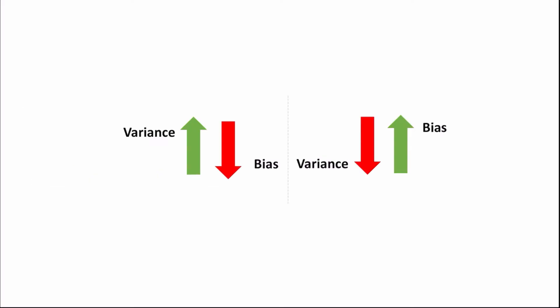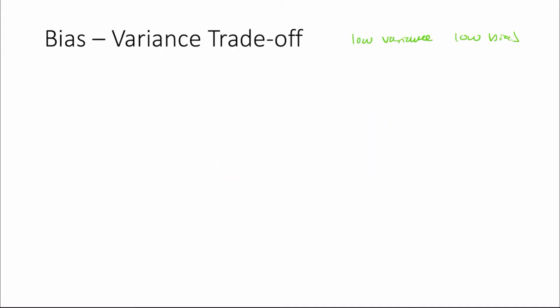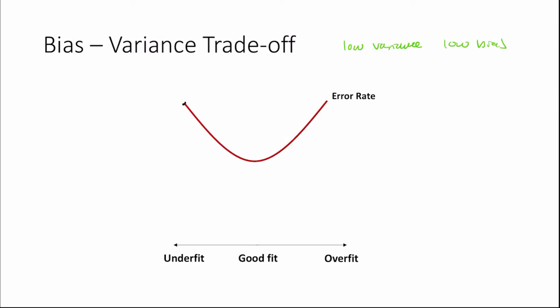As we increase variance, bias decreases, and vice versa. A good model has both a low variance and a low bias. Models which underfit our data have a high error rate and models which overfit also have a high error rate, while a good fit has a low error rate. Models which underfit have a very low variance and high bias; models which overfit have a very high variance and low bias. There is a sweet point in the middle where both variance and bias are relatively low but not too low or too high.